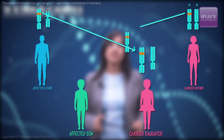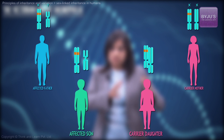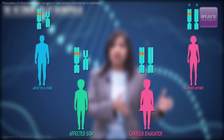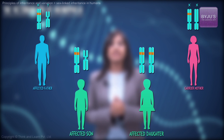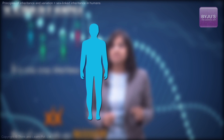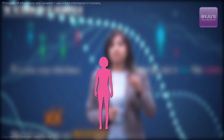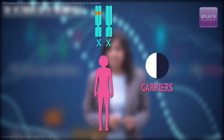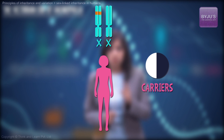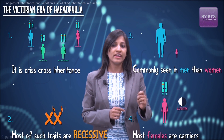Let's quickly summarize the main features of X-linked inheritance. One: it is criss-cross inheritance — father to daughter, mother to son. Mother to daughter will usually result in a carrier daughter, unless the father has also passed the unhealthy allele. Two: most of the traits are recessive. Three: such traits are more commonly seen in men than women. Four: females are mostly carriers, as they have two X chromosomes, among which one, if healthy, could mask the corresponding unhealthy allele.